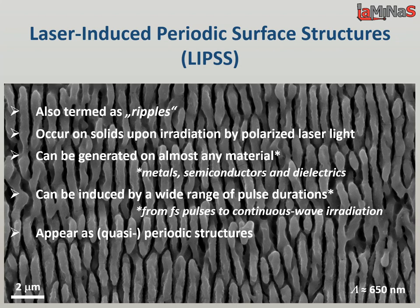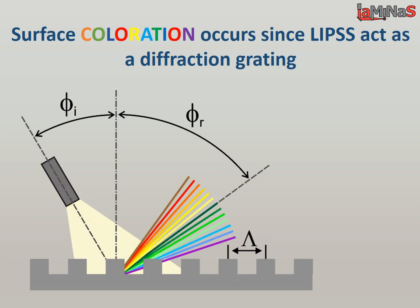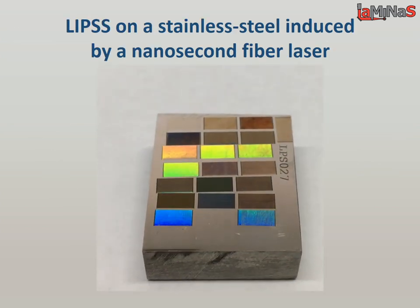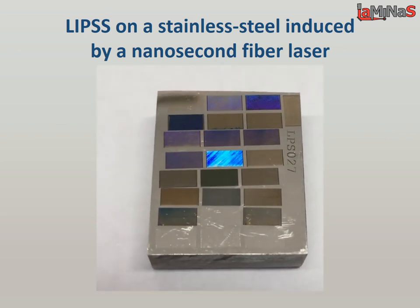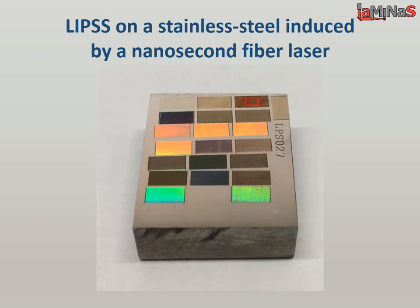They appear on a surface as quasi-periodic structures. Surface coloration occurs since LIPSs act as a diffraction grating. Due to this reason, the observed color significantly depends on the observing angle. Here we can see the colors at different angles when LIPSs are generated on stainless steel by a nanosecond fiber laser.